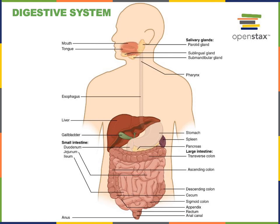Within the stomach, the bolus mixes with gastric juice to form a semi-liquid substance known as chyme. Gastric juice has a very low pH — it's very acidic — which helps protect against infection through antimicrobial activity, killing bacteria. The acid also helps to denature proteins and activate an enzyme known as pepsin. Pepsin is a protease that initiates the chemical digestion of proteins, breaking long polypeptides into shorter polypeptides.